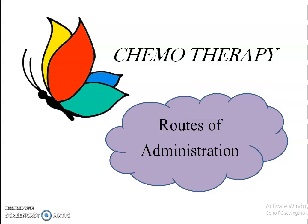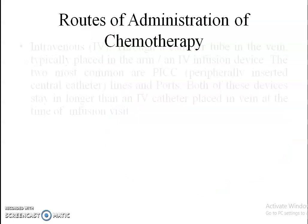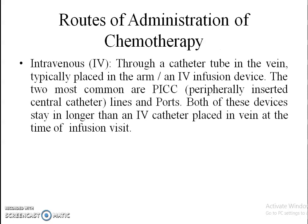Routes of administration of chemotherapy. The main route of chemotherapy administration is the intravenous method. Here a catheter tube will be inserted into the vein, and it will usually be placed in the arm or an IV infusion device.